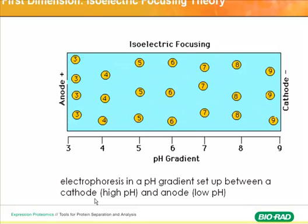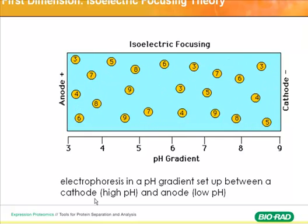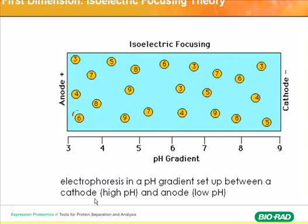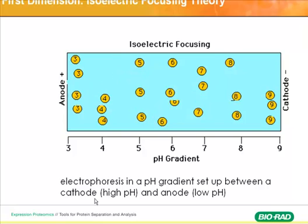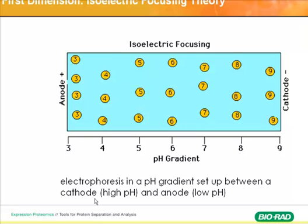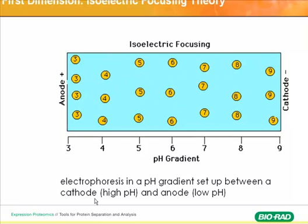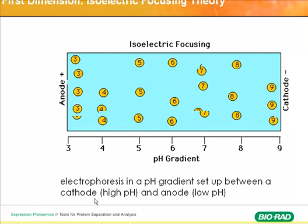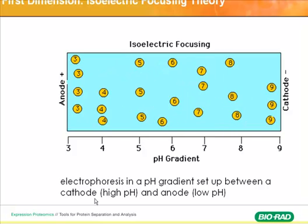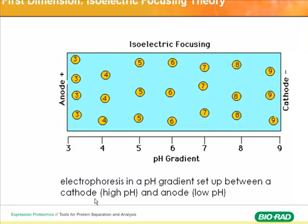In terms of the principle, here is a slide showing you what is actually isoelectrofocusing. Isoelectrofocusing is electrophoresis in a pH gradient set up between cathode high pH and the anode low pH. You have the mix of proteins. When you add the voltage to this field, you can see the proteins move in this field and stop at the PI. So this is the process of IEF.